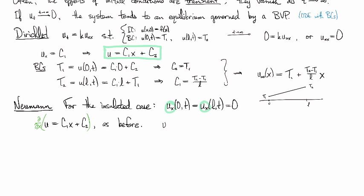We see that u sub x is given by c1. From our boundary conditions, that tells us then that c1 has to be equal to zero. So the upshot is that our equilibrium solution is just going to be a constant value.